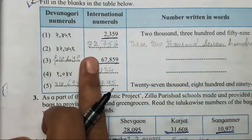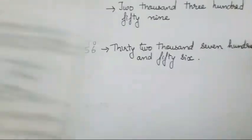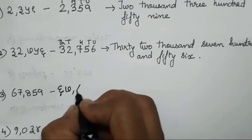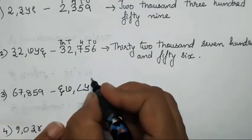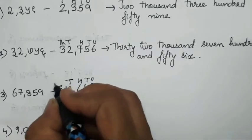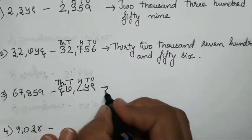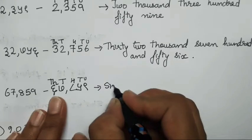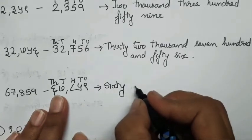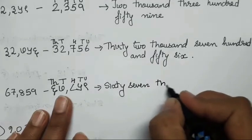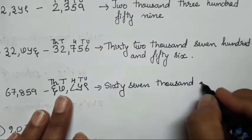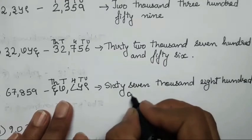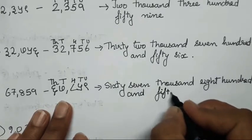Now the third one: the international number has been given — you all have to write the Devanagari script and the number in words. I will write it in Devanagari script — that is 67859. Unit, tens, hundred, thousand and ten thousand. Now let's write it in words: sixty seven thousand, eight hundred and fifty nine.